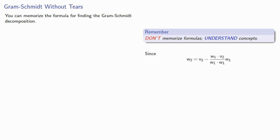Now you can memorize the formula for finding the Gram-Schmidt decomposition. But remember, don't memorize formulas, understand concepts. So we have the formula for that second orthogonal vector. But notice that this also means that w2 is a linear combination of the first orthogonal vector w1 and the vector we're replacing v2.